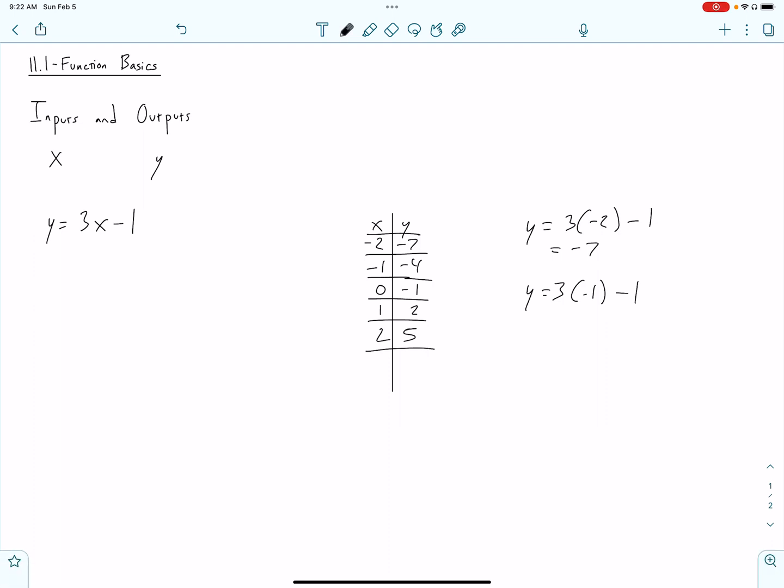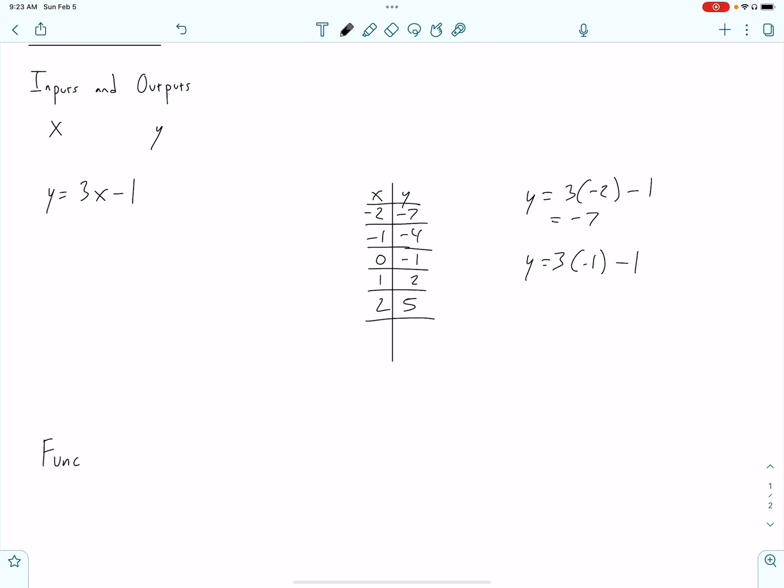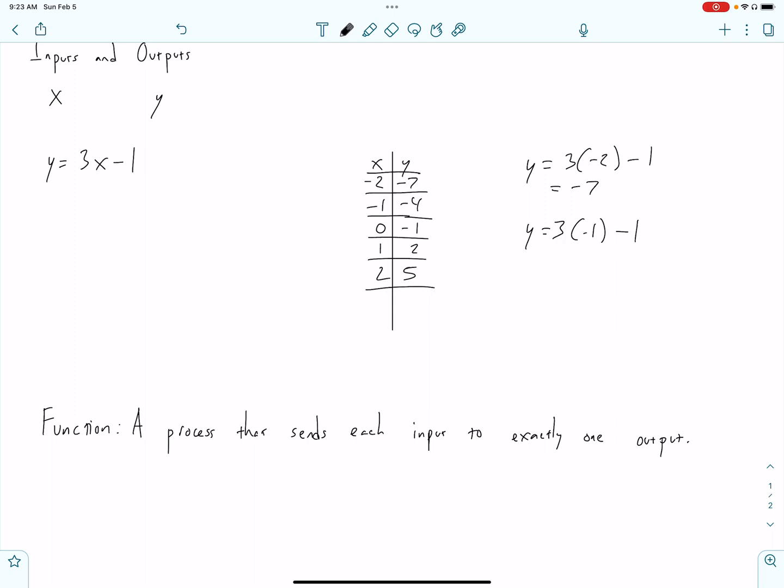Let me write the definition down, and then I'll pause. A function. And this is not an overly formal definition, but for now, just think of a function as a process. Some people call it a rule or a machine, but I'll just say a process that sends each input, and here's the key part, to exactly only one output. And another thing you might add here is that it consistently sends.